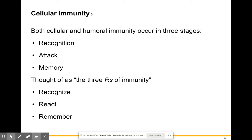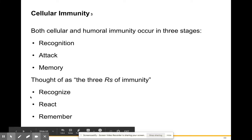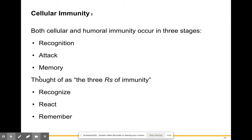Both cellular and humoral immunity occur in three stages — we can think of these as the three R's: recognize, react, and remember, or RAM: recognition, attack, and memory. We want to recognize that something is a foreign body, attack that antigen or pathogen — whether by producing antibodies, phagocytosis, or labeling — and then remember that pathogen for a later time.